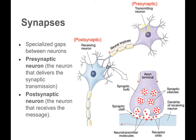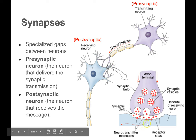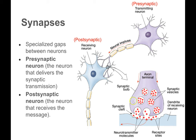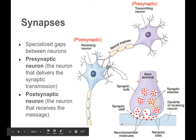So this is the pre-synaptic — before the synapse — and this is post-synaptic, after the synapse. If we zoom in on the synapse, you might see something like this. This is the axon terminal of the pre-synaptic neuron, or the terminal button.